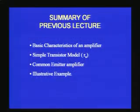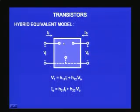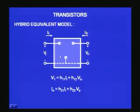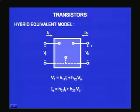Now let us move on to another model which is more popular — the hybrid model. In general, any circuit can be looked at as a two-port network. As you can see on the screen, you have something like a black box. We call this a black box because we are not interested in the details of the circuit inside. It has several components — transistors, resistors — and we have an input port and an output port with two terminals each. This is a simple two-port network.